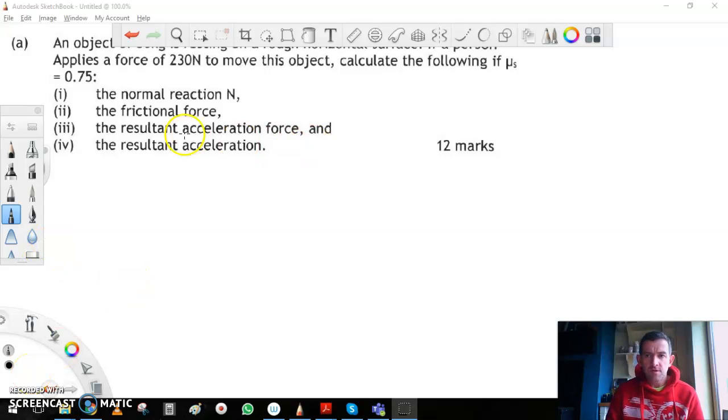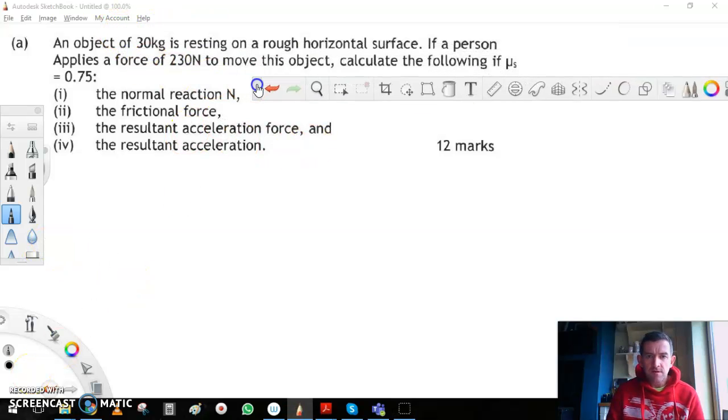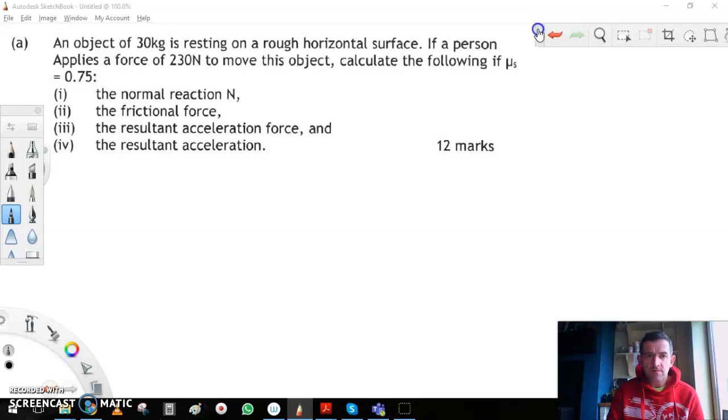We have an object of 30 kilos resting on a horizontal surface. If a person applies a force of 230 newtons to move this object, calculate the following if μ_s (coefficient of static friction) is 0.75.